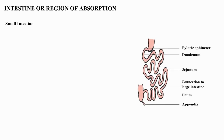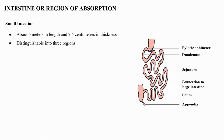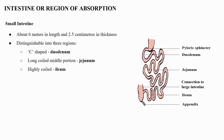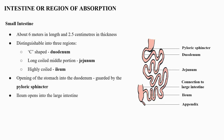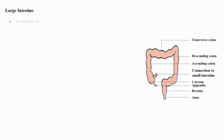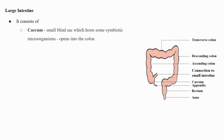The small intestine is about 6 meters in length and 2.5 centimeters in thickness. It is distinguishable into three regions: a C-shaped duodenum, a long coiled middle portion called the jejunum, and a highly coiled ileum. The opening of the stomach into the duodenum is guarded by the pyloric sphincter. The ileum opens into the large intestine.